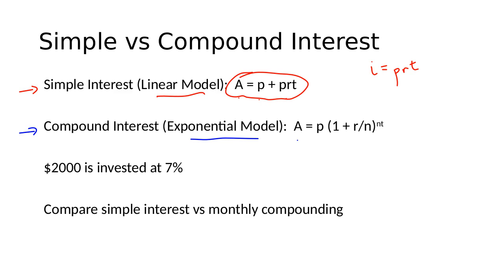The situation we're going to look at is $2,000 that's invested at 7%, and we're going to compare that investment using simple interest against being compounded monthly. Let's take a look.